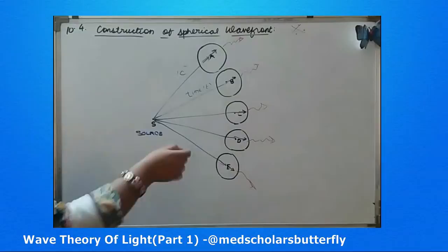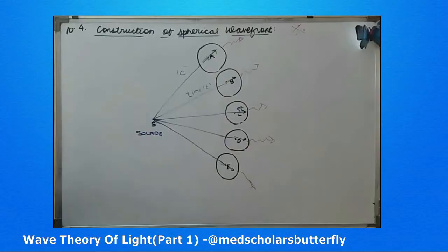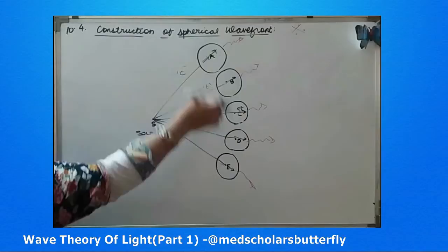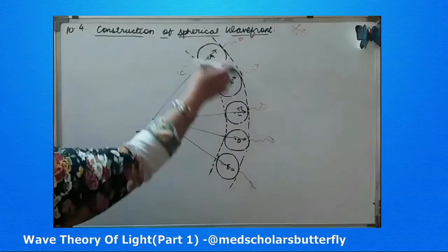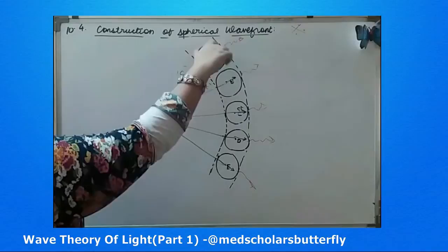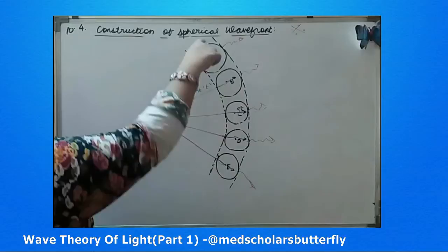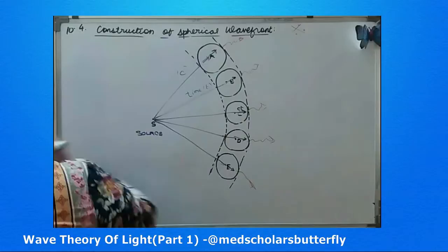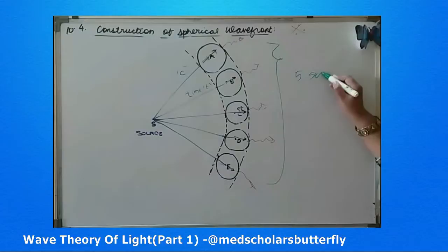The radius of each circle is nothing but CT — velocity c and in time t. Then we join the tangent from the left side and right side of the circles. You can draw a midline, then draw five circles over it, then draw both tangent lines and join the point centers. This gives us five secondary wavefronts, and this is how you construct a spherical wavefront.